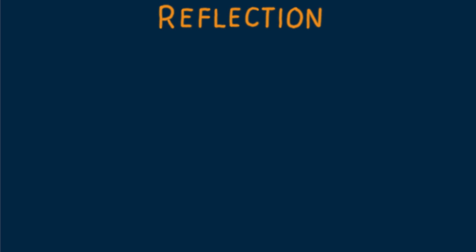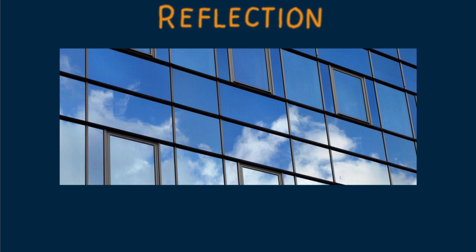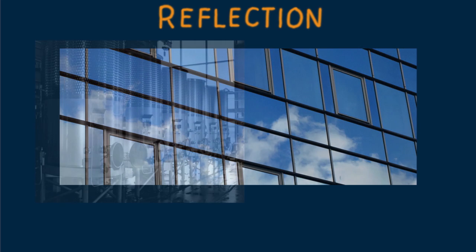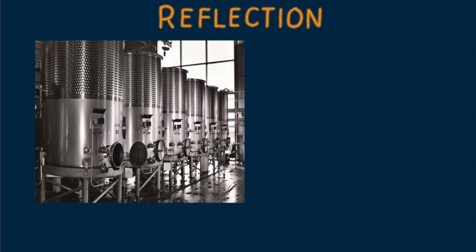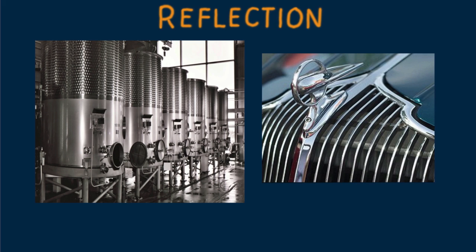Some materials, like glass, let a lot of light pass through them and reflect only a little. Other materials, like polished metals, reflect most of the light that strikes them and let only a little through.